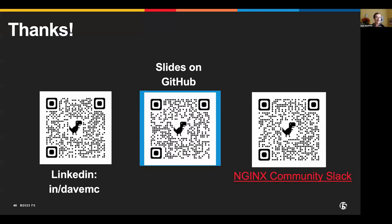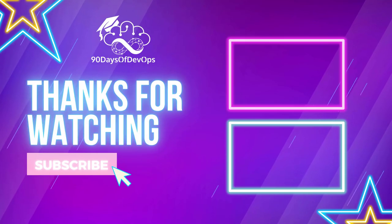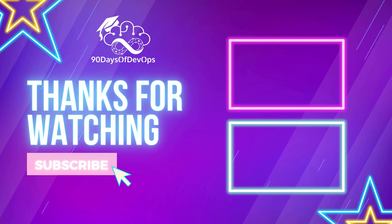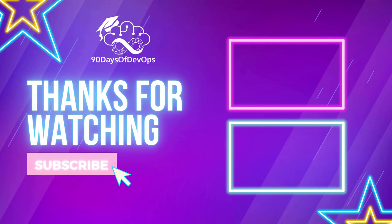And for those who worked on the ninth data kind number — here's the result: all 42 digits of it. Let me know if you got it right. Thanks for listening today. You can find my slides on GitHub, find me on the Nginx community Slack, or connect with me on LinkedIn — Dave McAllister or Dave Mac. Thanks, and I'll see you next time.